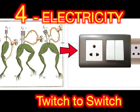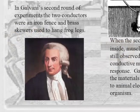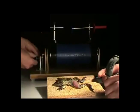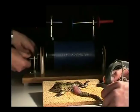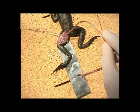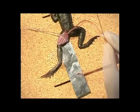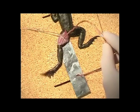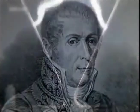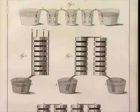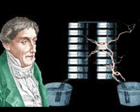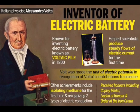4. Electricity — twitch to switch. In the 1770s, a guy named Galvani studies frog muscles. He pins the dead frog legs to an iron frame with copper tacks. The legs twitch by themselves. He does not know why. Next, Volta discovers the secret of what makes the muscles move. Electricity flows between two different wet metals.